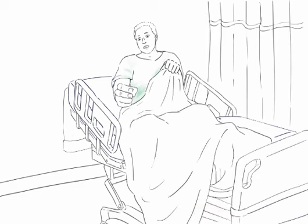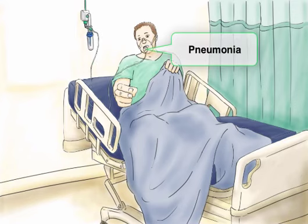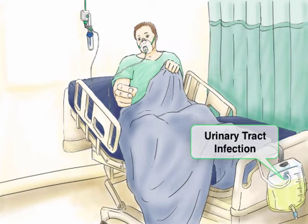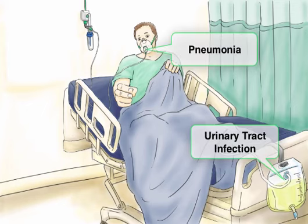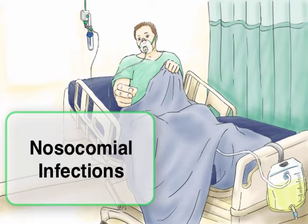We're going to set this scene in a hospital room. We'll give this guy an oxygen mask to represent that he has pneumonia, and down here we'll have a bag of urine hanging off the bottom of his bed to show that he has a urinary tract infection. Pneumonia and UTIs are the two most common illnesses caused by these bacteria, and the hospital setting is because all of these are important nosocomial, or hospital-acquired, infections.